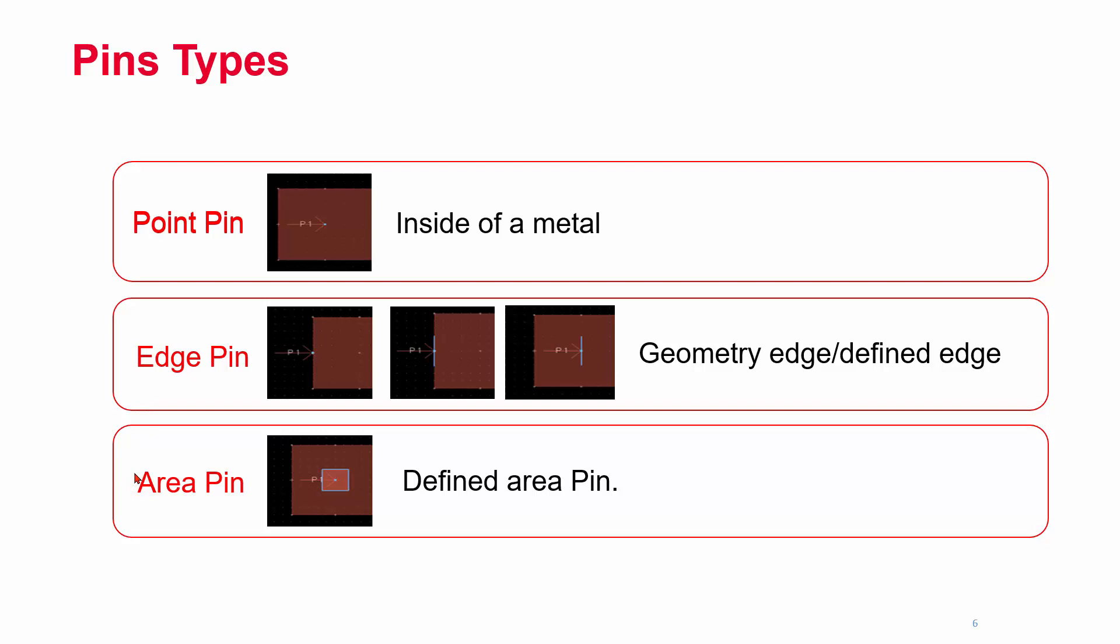For the pointer pins and area pins, they are very intuitive. You can directly put the pins internally or define that area. For the edge pins, if you put the pins to the edge, then the entire edge automatically becomes an edge, or you can draw a certain line either on the edge or internally.